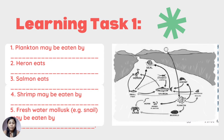Number one, plankton may be eaten by ___. Number two, heron eats ___. Number three, salmon eats ___. Number four, shrimp may be eaten by ___. And number five, freshwater mollusk, for example snail, may be eaten by ___.